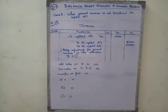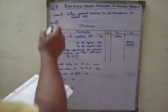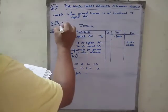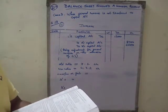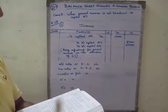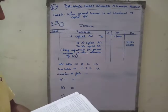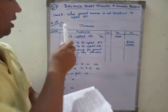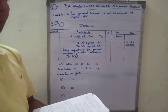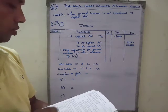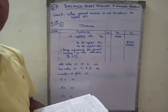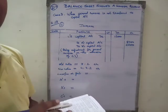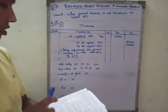This is the 21st video of the second chapter. The balance sheet shows a general reserve. This is question number 29, second part — when partners do not want to transfer the general reserve into their capital accounts, and prefer to record an adjustment entry for the same at the time of admission of a new partner.